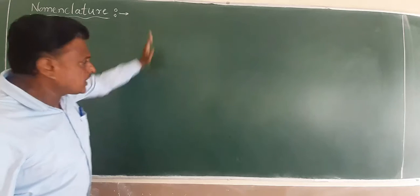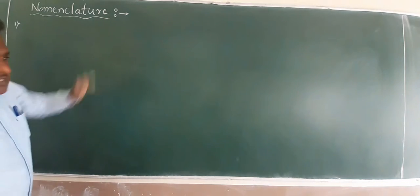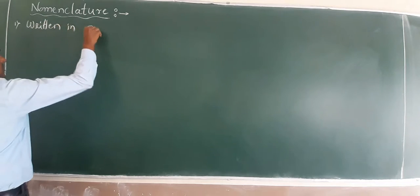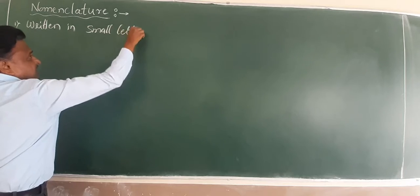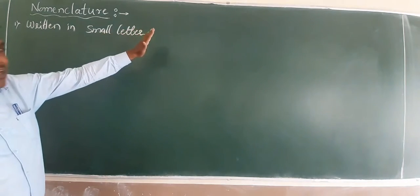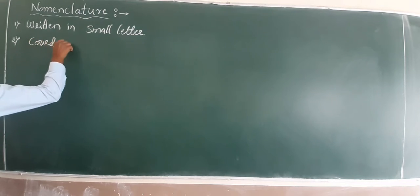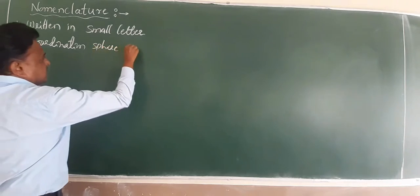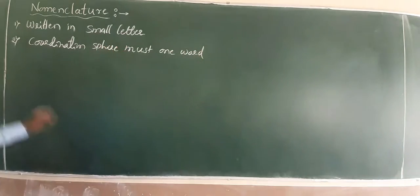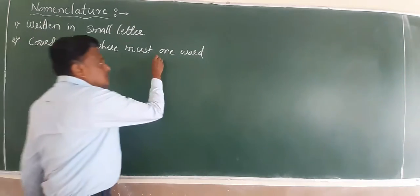Before knowing the nomenclature, we follow some rules. The first rule: the whole nomenclature must be written in small letters. The whole nomenclature cannot use capital letters. The coordination sphere must be written as one word.